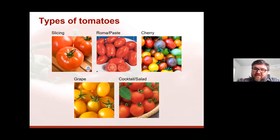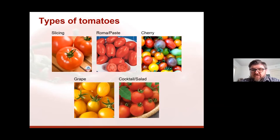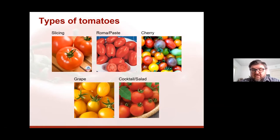Grape tomatoes are a little bit larger than the cherry and you can also see that they're oblong in shape. They're not that much bigger though, so a lot of people use the terms interchangeably. And then we have what we would call a cocktail or salad tomato. They're actually bigger than the cherry and the grape — maybe between one and two inches in diameter. So smaller than a slicing, bigger than a grape or cherry. Some people use those a lot for salads; I've even seen them pickled or canned. These are the five common types of tomato fruits.